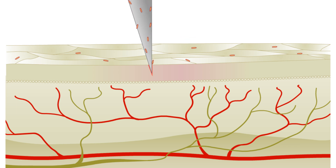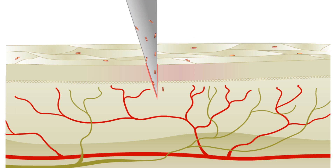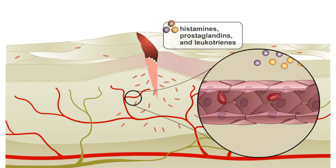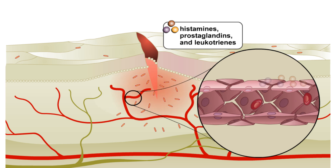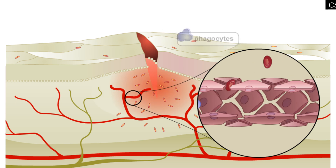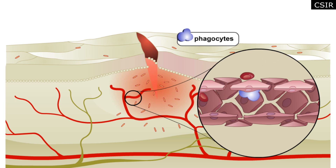Damage to the body's tissues through heat, chemicals, sunburn, cuts, or microbial infections trigger a general, non-specific defensive response called inflammation. Signs and symptoms of inflammation include redness, pain, heat, swelling, and sometimes loss of function.